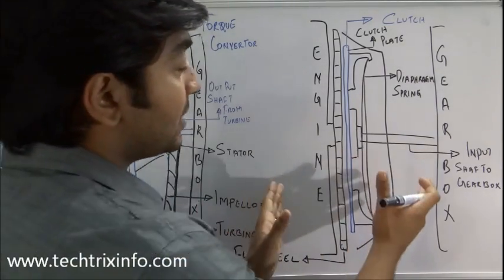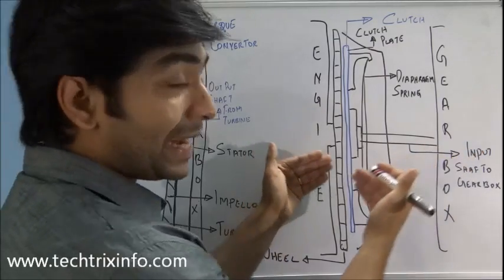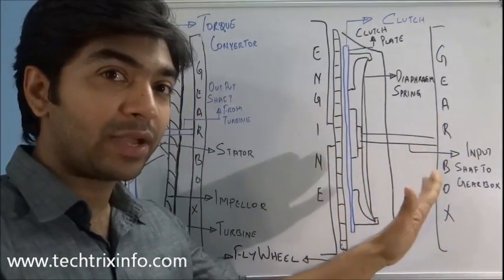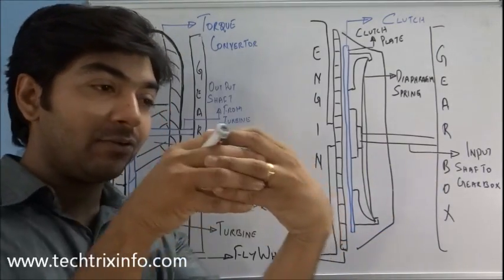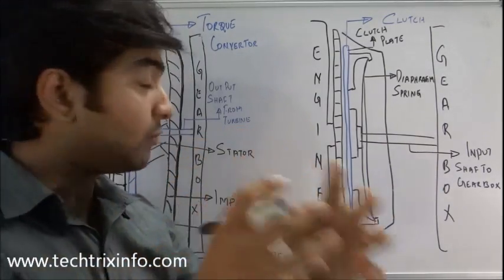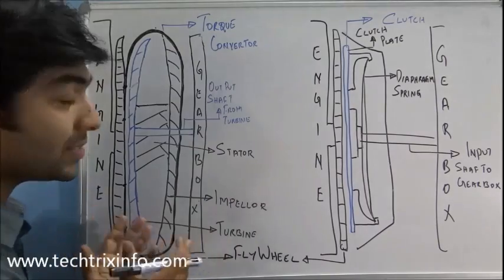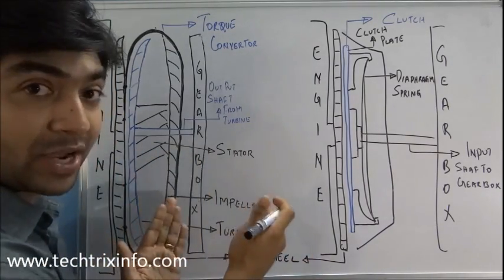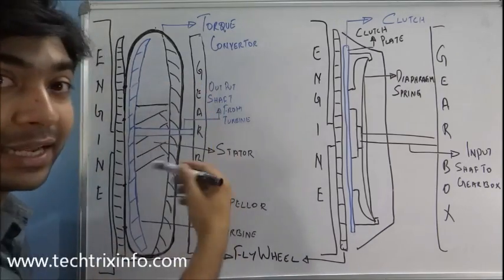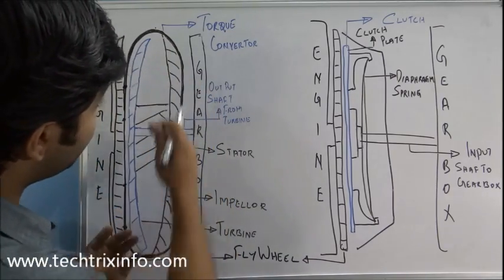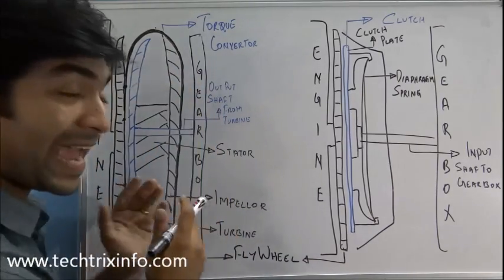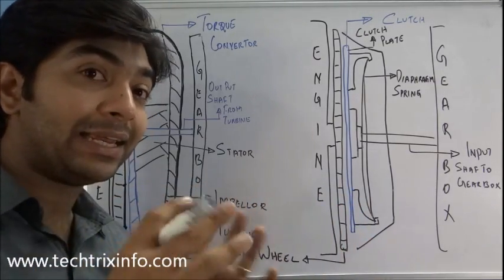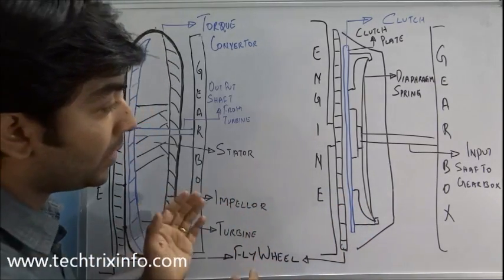The clutch creates a mechanical linkage with the engine to transmit or take away the power — it is mechanically linked with the engine. The torque converter, however, is not mechanically linked with the engine to take away the drive; it is hydraulically linked. It's a fluid coupling — it is the fluid inside the torque converter that actually takes the drive.